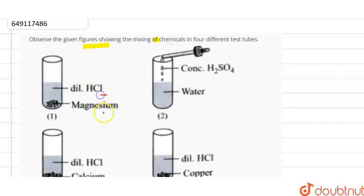In the first test tube, dilute HCl is reacting with magnesium. So you know, when metals react with acid, what do we get? Salt and H2 gas - hydrogen gas is released.